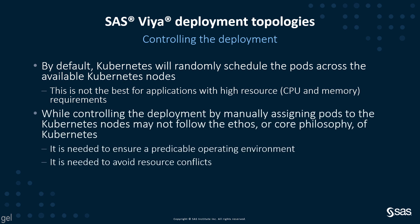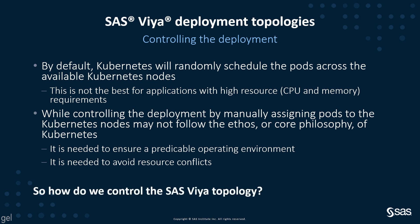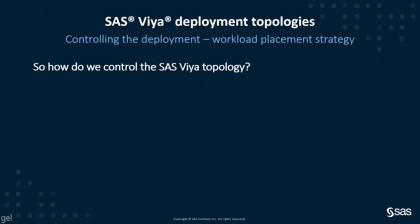While controlling the deployment by manually assigning pods to Kubernetes nodes may not follow the core philosophy of Kubernetes, it is needed. We need this to ensure a predictable operating environment and to avoid resource conflicts. So how do we control the SAS Viya topology? Controlling the deployment.